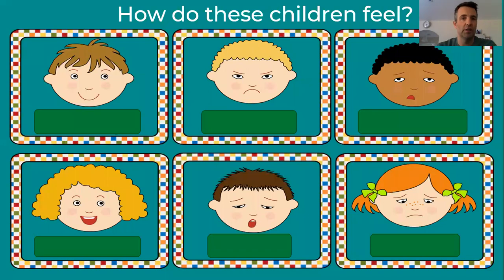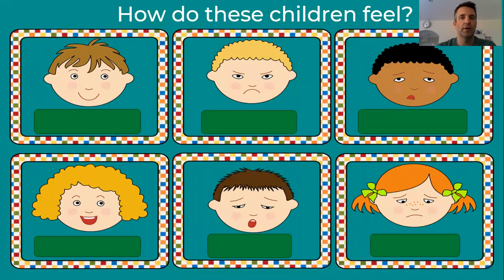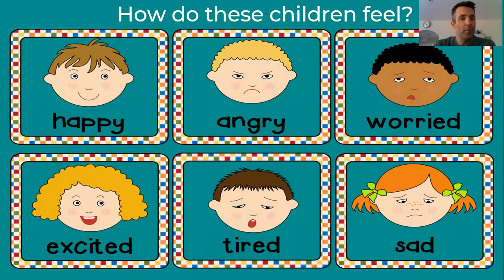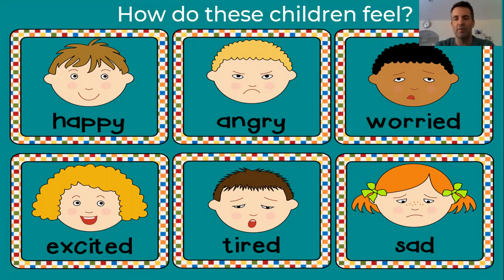Let's have a look at the answers. We start off with a happy face, then we've got an angry face. In the middle there is a worried face. Top right, someone is excited. Bottom left, there's a big yawn — a tired face. And bottom right is a sad face — somebody doesn't look very happy at all.